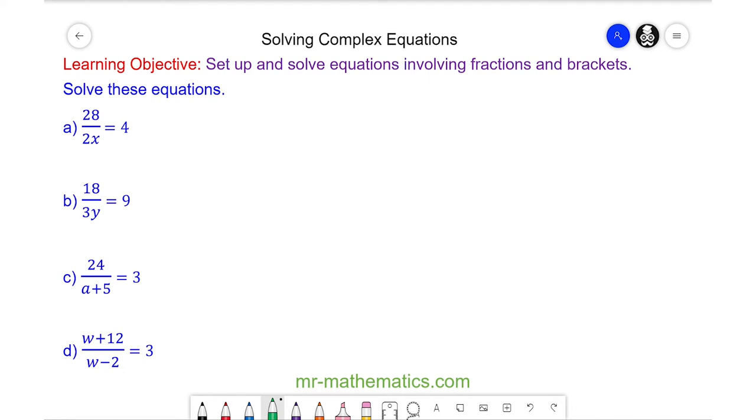We begin with question a where we have 28 divided by 2x is equal to 4. To solve this equation we need to find one single value of x, but right now x is the denominator of a fraction.